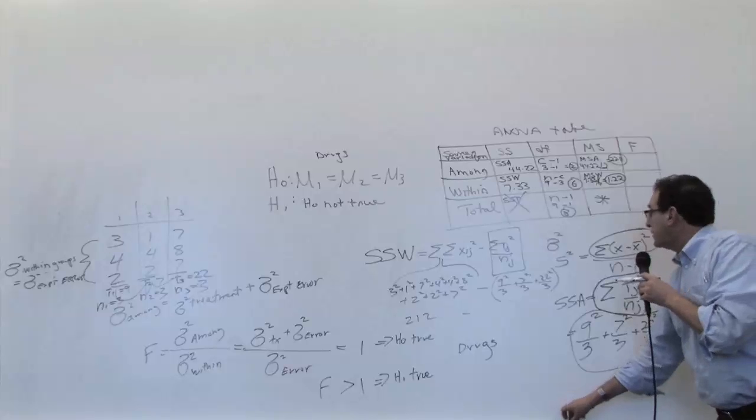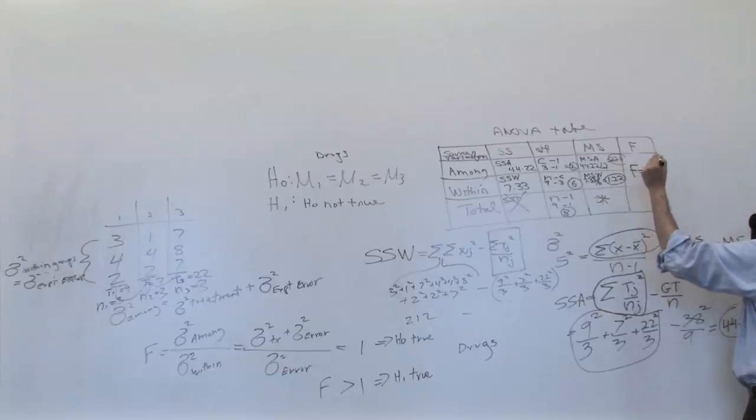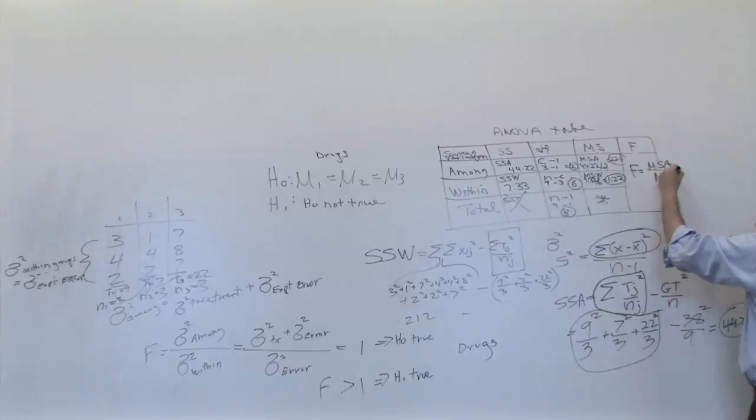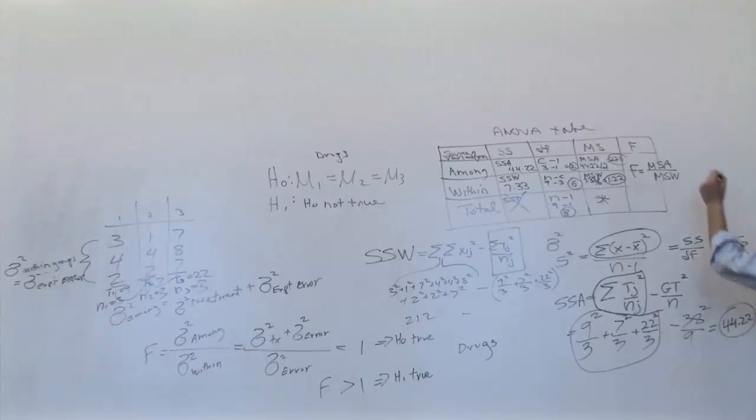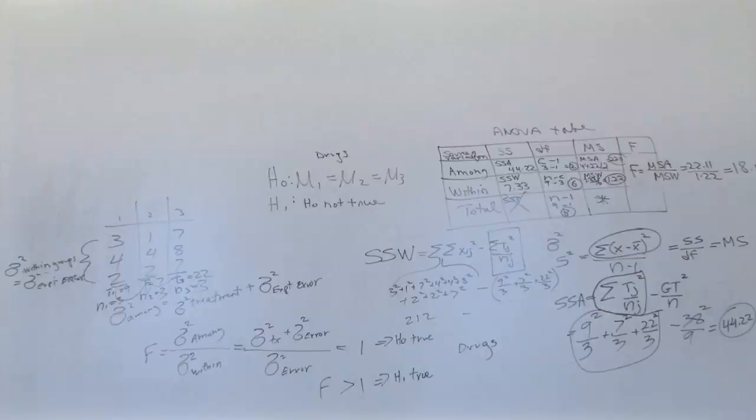So that's another key number. And finally, as I think somebody said, the next step is to calculate the F. And the F is simply going to be the MSA divided by the MSW, which is equal to, in this case, 22.11 divided by 1.22, which of course comes out to 18.12. Which is clearly much bigger than 1, and therefore probably the H1 is true, the H0 is false. But before we go into my next and final step of this whole thing, anybody have any problem with the 18 point?